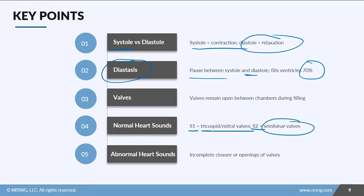S2 is associated with the semilunar valves — your pulmonic valve and your aortic valve — closing. Then you have abnormal heart sounds: either incomplete closure, which creates regurgitation where blood goes backward, or a narrowing, which is stenosis.